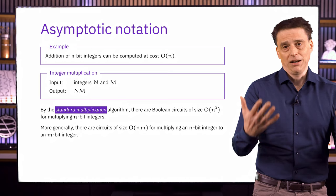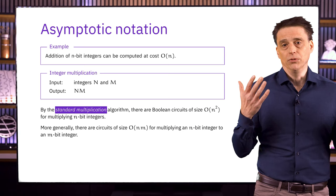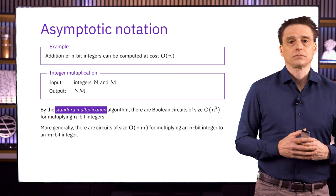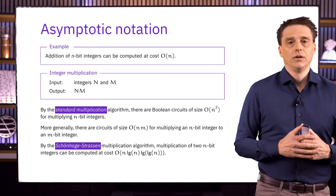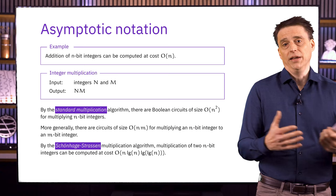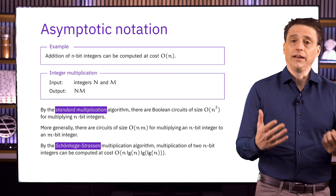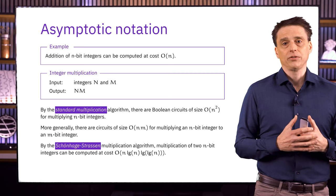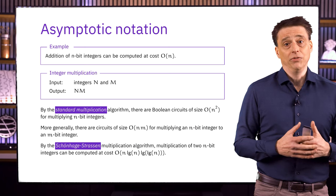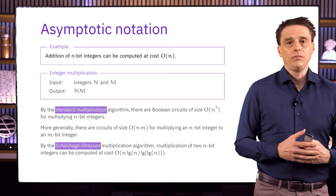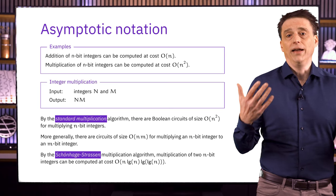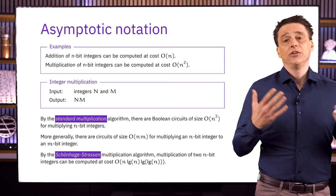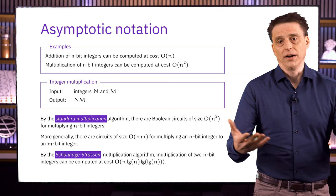It's actually possible to multiply two N-bit integers in a way that's asymptotically superior to the standard multiplication algorithm. In particular, the Schönhage–Strassen multiplication algorithm multiplies two N-bit integers with a cost of big O of N times log N times log log N. So, as N gets large — like tens of thousands of bits — this is actually a more efficient way to multiply, but it's complicated and the overhead makes it impractical for smaller numbers. Let's add multiplication to our list of examples and list the cost given by the standard multiplication algorithm, which is big O of N².